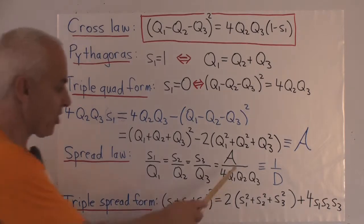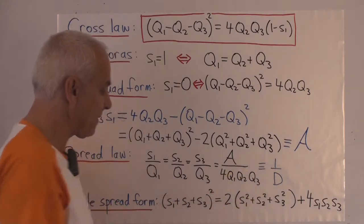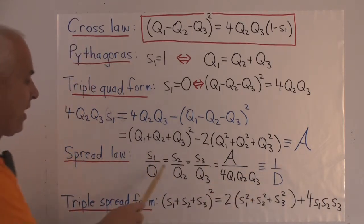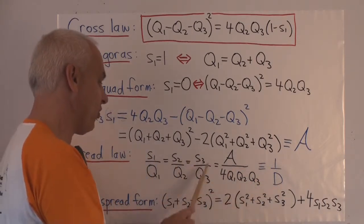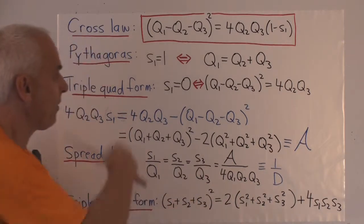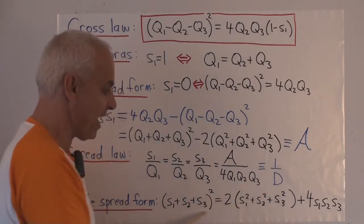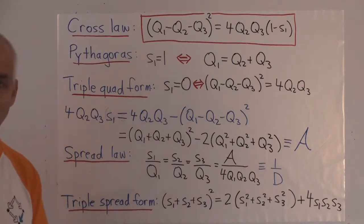And finally, if we call this ratio one over D, then we can replace Q1 with D times S1, and Q2 with D times S2, and Q3 with D times S3. We can plug that all into the cross law. And when we write that out and cancel all the D's, then we get a formula only involving the S's, and that's the triple spread formula.